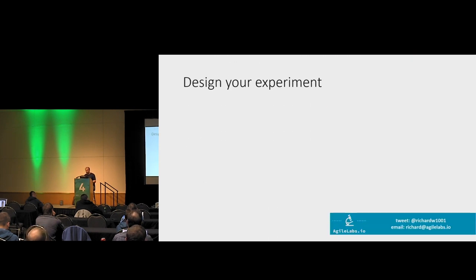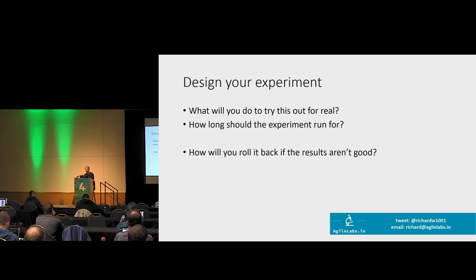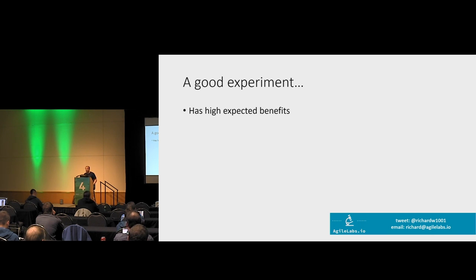When designing the experiment, start with: what are you going to do? What's an actual step you can take, preferably now or tomorrow? Think about how long the experiment should run — if you say you're going to try TDD for a day, you won't see results because it's a skill that takes time to learn. And a really important one: how will you roll it back if it doesn't go to plan? If you say 'we're going to rewrite everything in a different language,' not only is the cost really high, the rollback is really hard too. A good experiment has high expected benefits, changes the important things, has low expected costs, gives fast feedback, and can be rolled back.